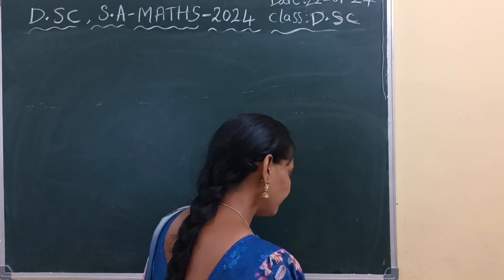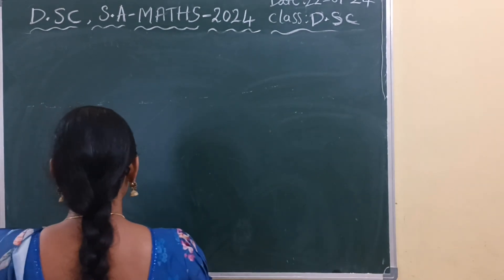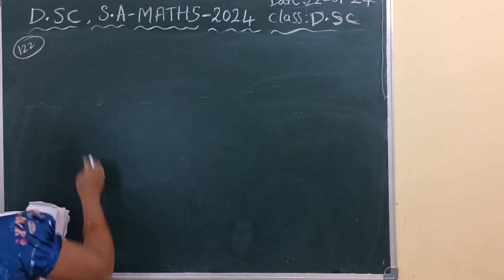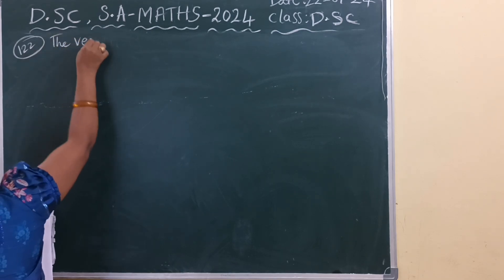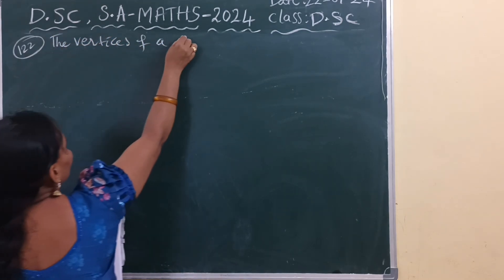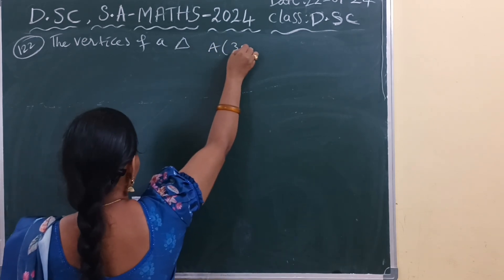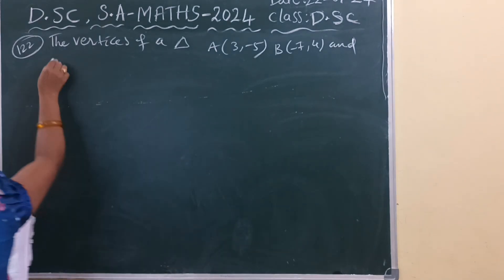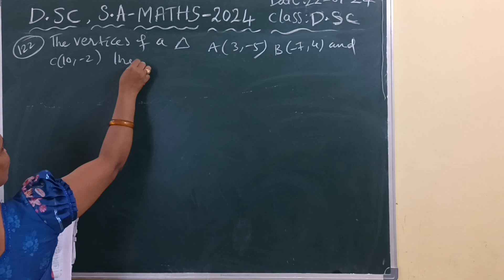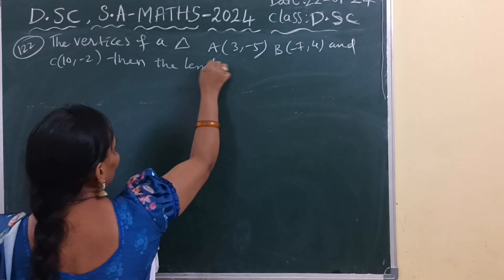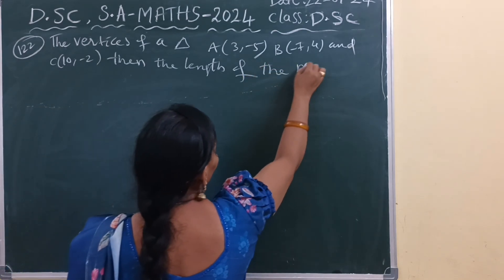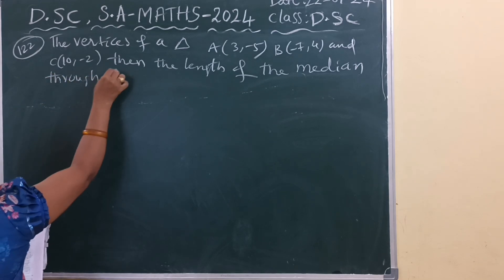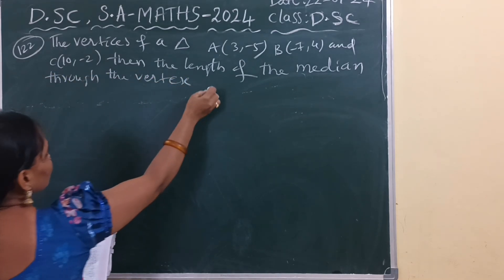The next question: the vertices of a triangle are given as A(3, -5), B(-7, 4), and C(10, -2). Find the length of the median through vertex C. Taking triangle ABC, the median from vertex C goes to the midpoint of AB. We call this median MC.